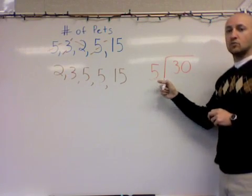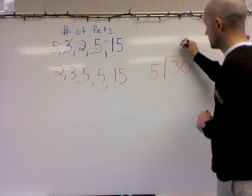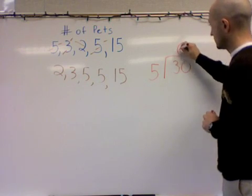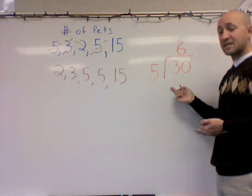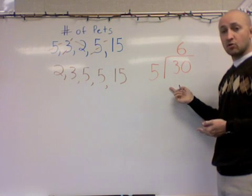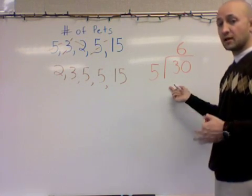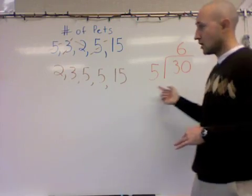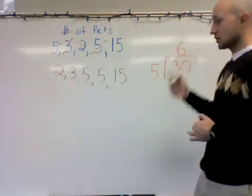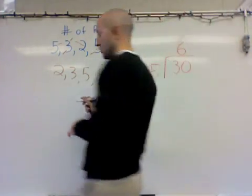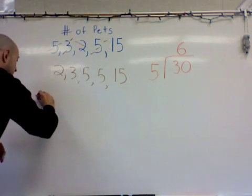So now I know I'm going to divide 30 by five. Five goes into 30 six times evenly. This means the mean number — the average number of pets owned by the people I asked — is six. The mean equals six.